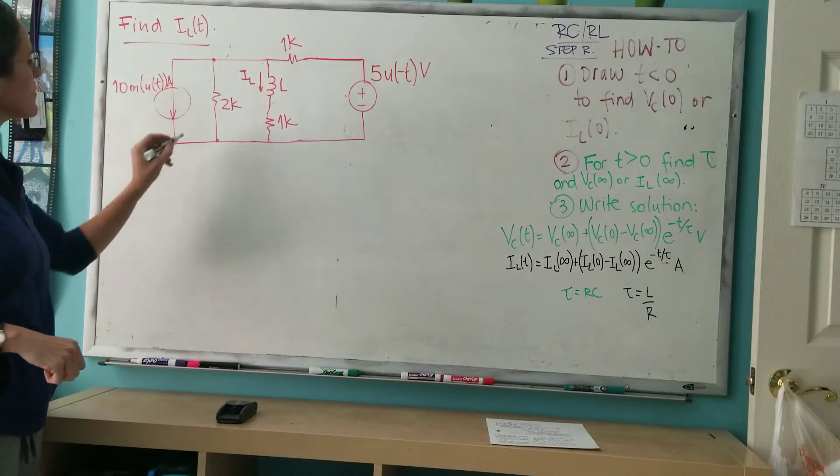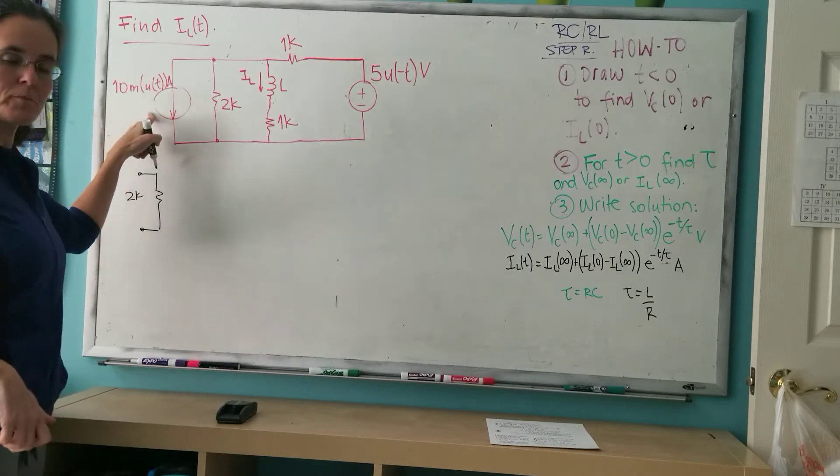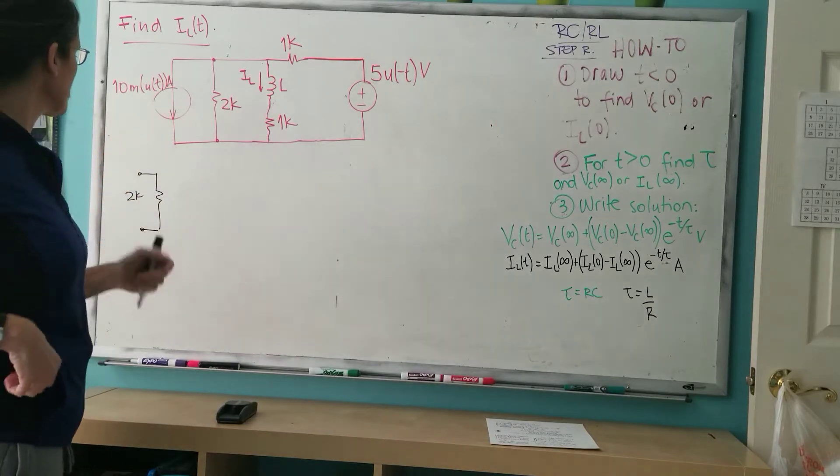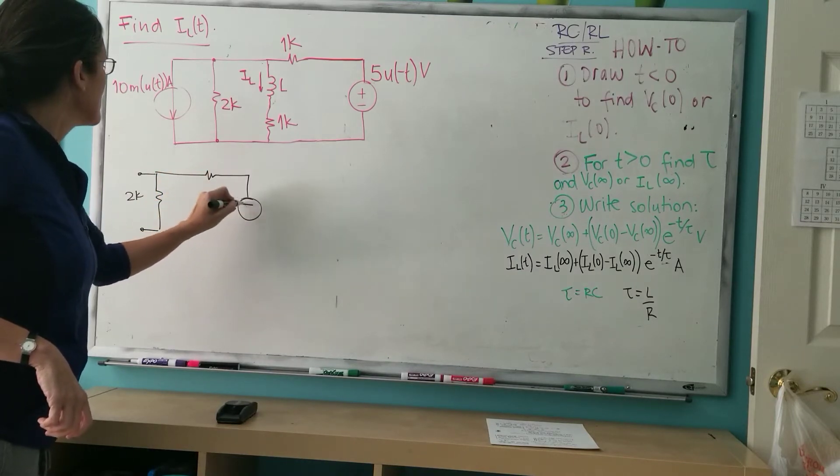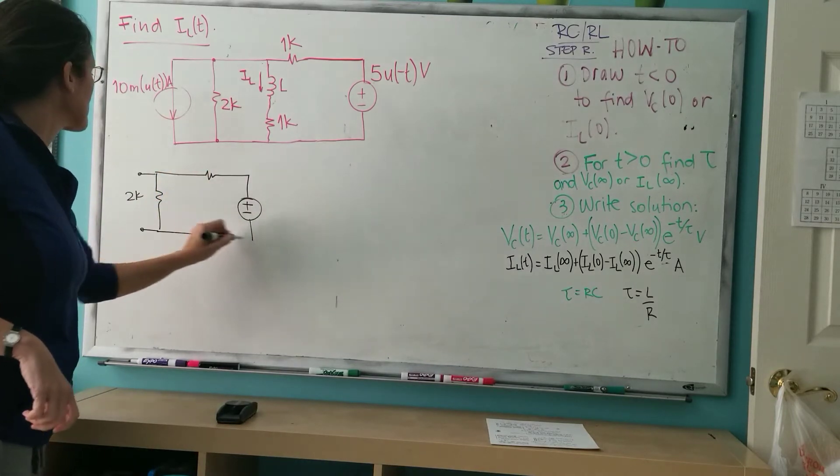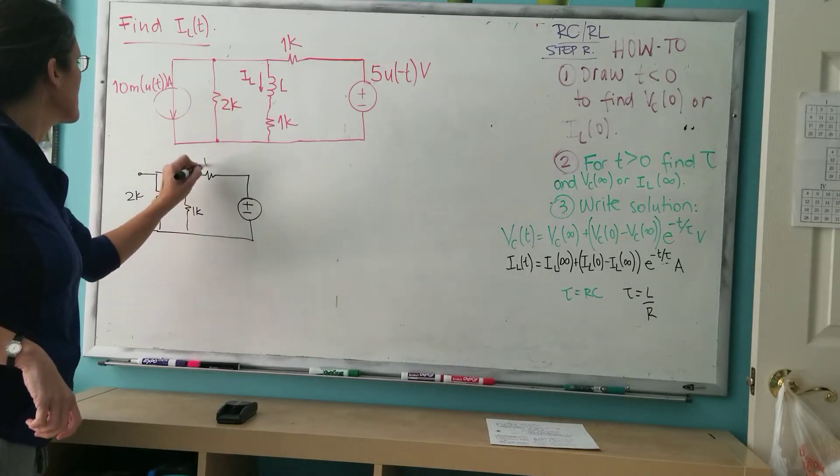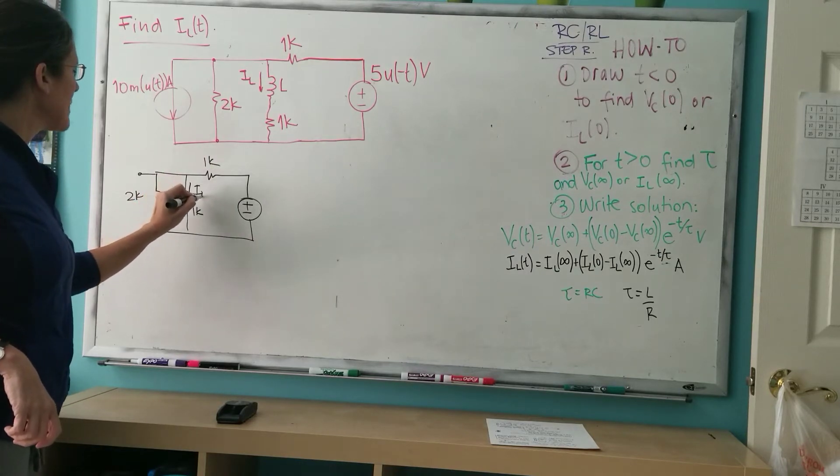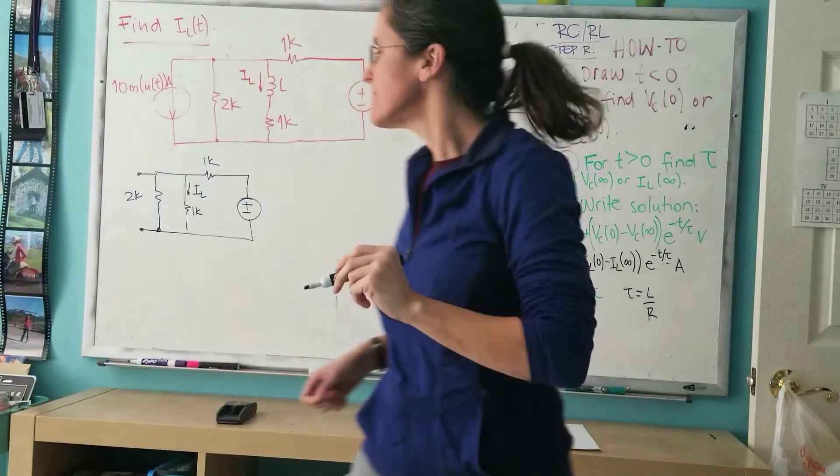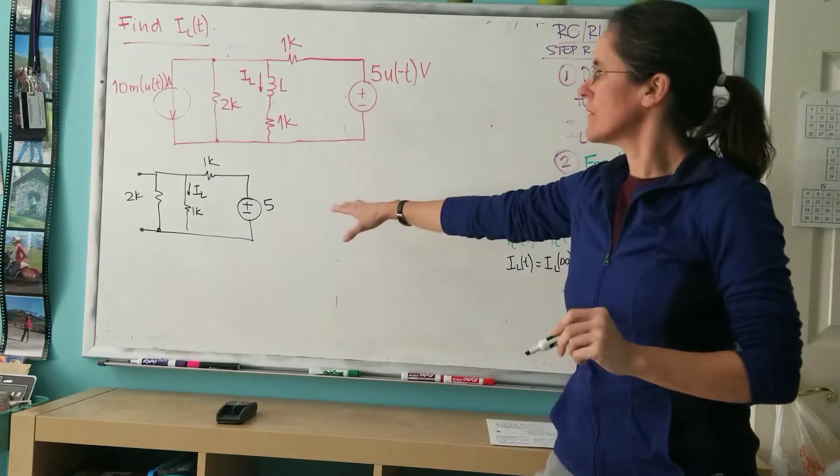In the beginning, this one is turned off. I'm going to leave it open, but the two kilo ohm resistor is there. The current supply is off; we leave it open. But the five volts is there. So this is my circuit for t less than zero. There is a 1k here, 1k here, 2k here, and this is the inductor. I'm only labeling it with IL because it's IL until zero. In this case, it's five volts.